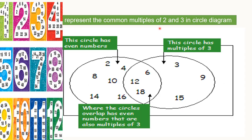To represent these common multiples of 2 and 3 in the circle diagram, we can represent it in this way children. Multiples of 2 separately in one circle and multiples of 3 separately in another circle. What we can observe in both circles is that 6, 12, 18 are common. So we will join these two circles and represent the common multiples in this intersection point here.